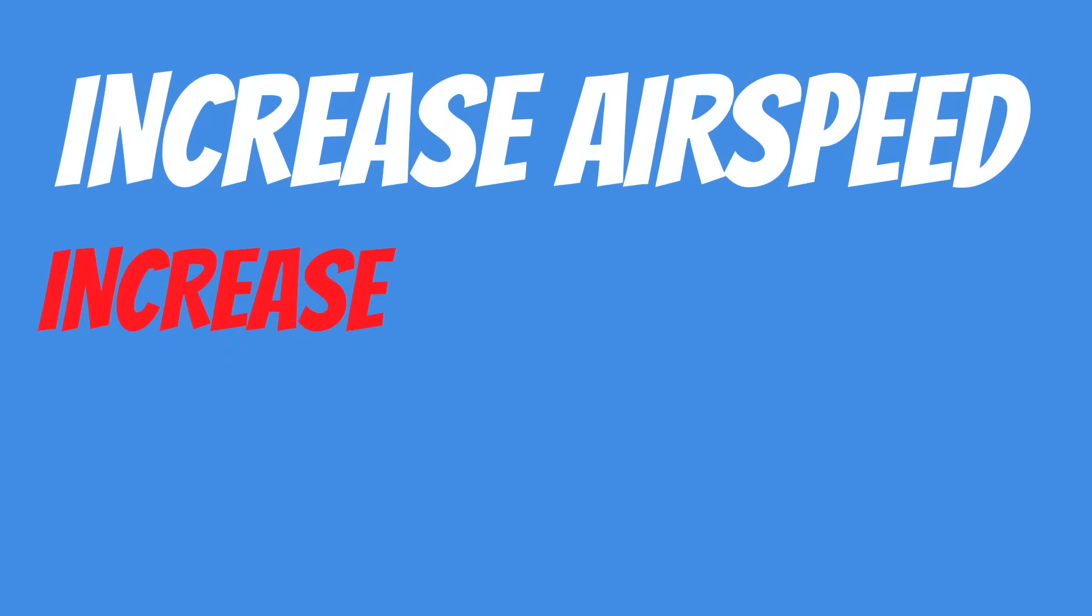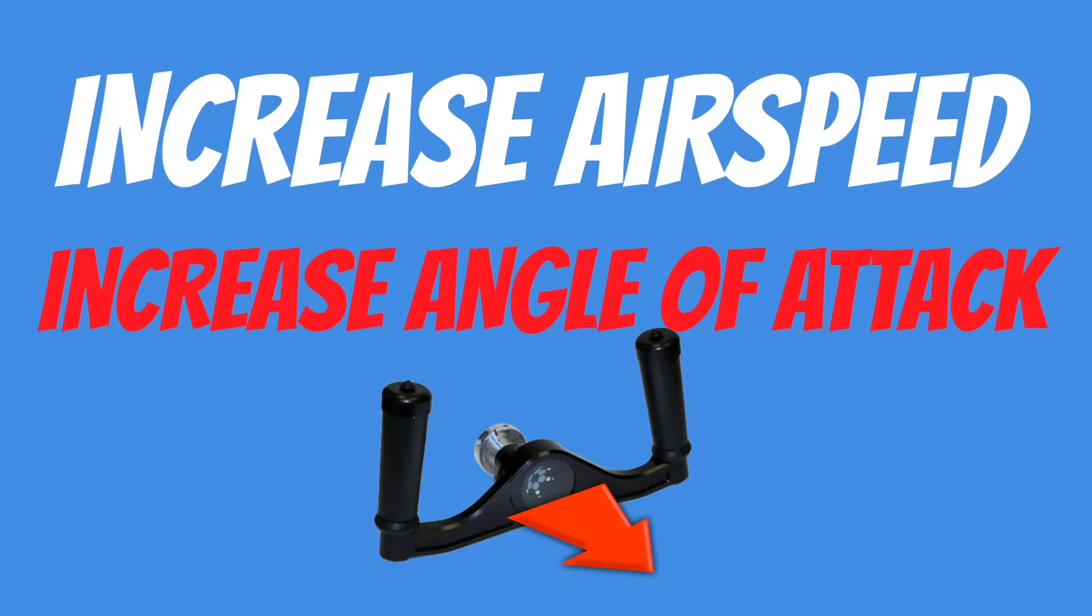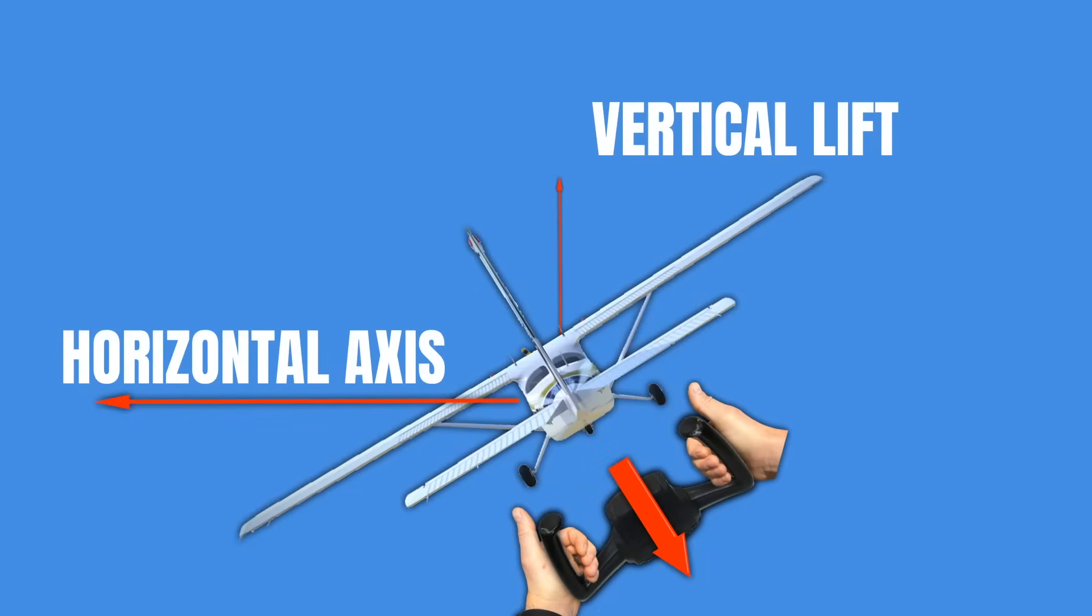Now the easiest thing to do is to pull back on the yoke. And this does three things. First it increases the vertical lift that our wings are producing. Because if we didn't do that then the airplane would descend because there's less vertical lift now that we're tilted to the side.